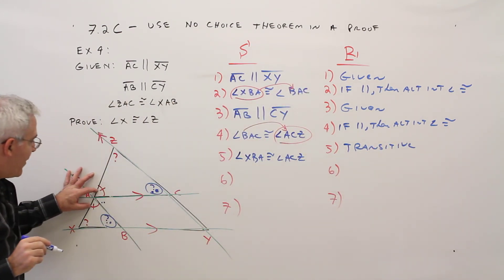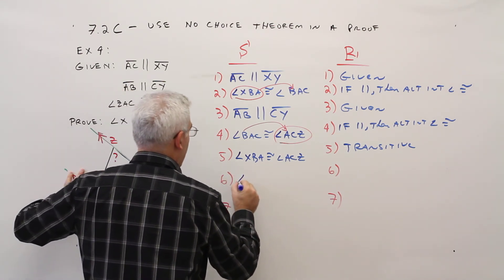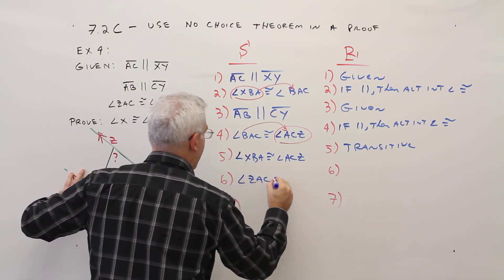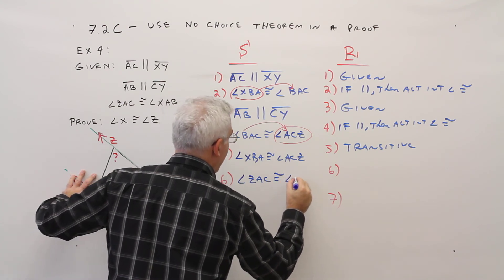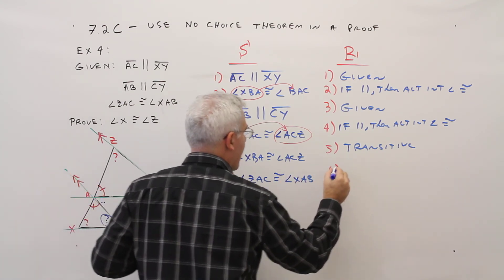And then I was given these angles. I'll just list those right now. Angle ZAC is congruent to angle XAB. That was given.